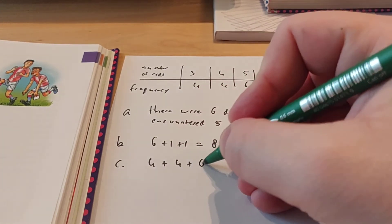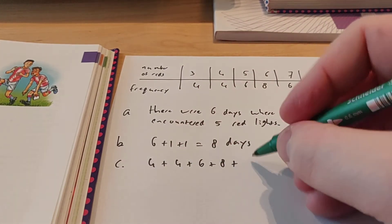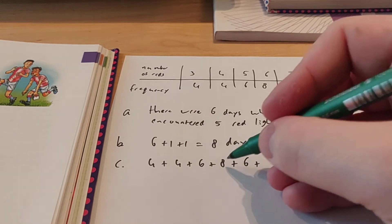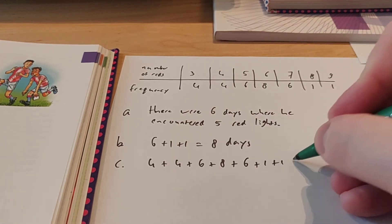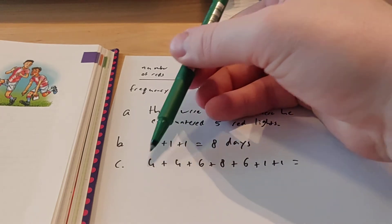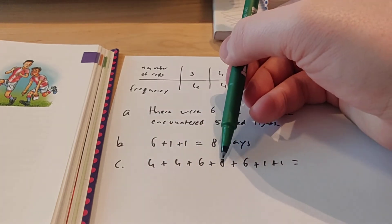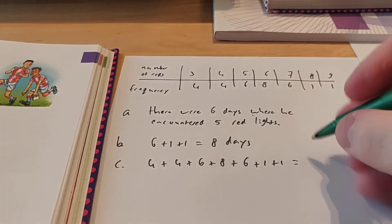So 4 plus 4 plus 6 plus 8 plus 6 plus 8 plus 1 plus 1. Let me see what this is. This is 10, right? Alright, and then here we have 14, so 22, 28, 30.